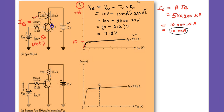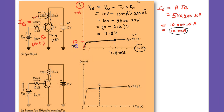10 milliamperes times 220 ohms gives 2200 millivolts, which is 2.2 volts. So VCE equals 10 minus 2.2, which is 7.8 volts. This is our first Q-point: IC is 10 milliamperes, VCE is 7.8 volts, and IB is 200 microamperes.